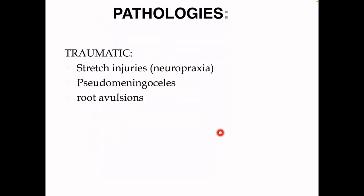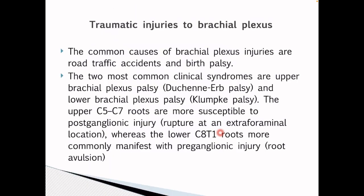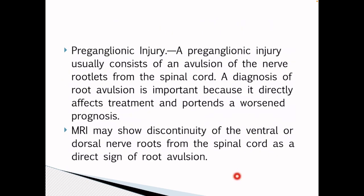Now coming on to the pathologies. The traumatic pathologies can be divided into stretch injury, which includes neuropraxia, pseudomeningoceles, and root avulsion. The common causes of brachial plexus injuries are road traffic accidents and birth palsy. The two most common clinical syndromes are upper brachial plexus palsy, i.e. Erb's palsy, and lower brachial palsy, i.e. Klumpke's palsy. The upper C5 to C7 roots are more susceptible to postganglionic injury, whereas the lower C8-T1 roots more commonly manifest with preganglionic injury. A preganglionic injury usually consists of an avulsion of the nerve root from the spinal cord. A diagnosis of root avulsion is important because it directly affects treatment and portends a worsened prognosis.